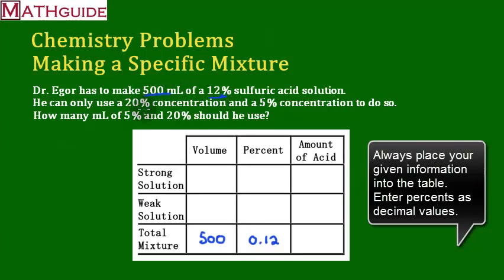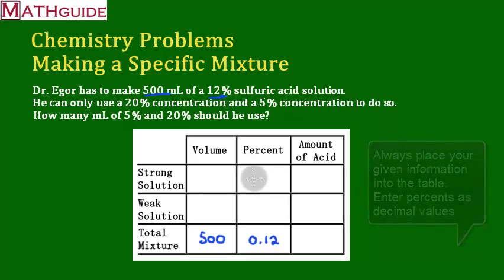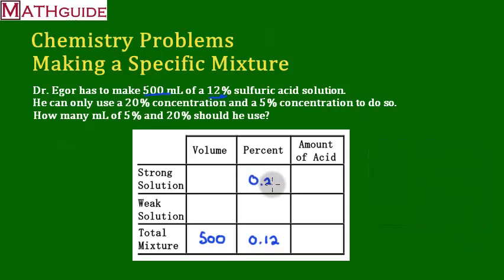I've got the 20% and 5%. Well, the strong percent must be our 20%. So, again, I'm going to write that as a decimal number.